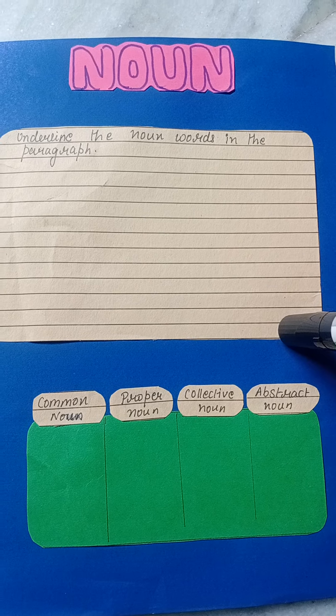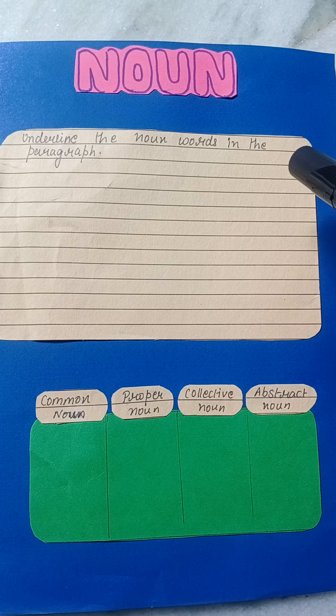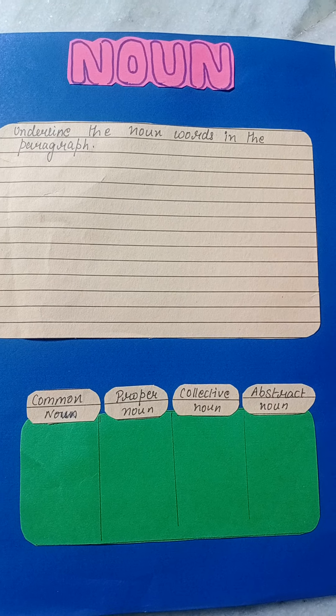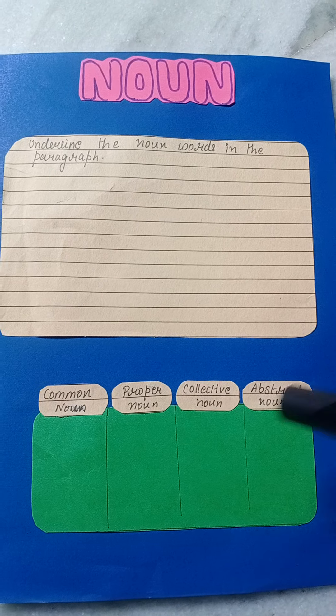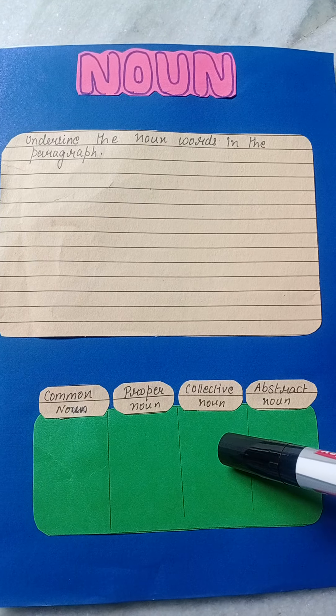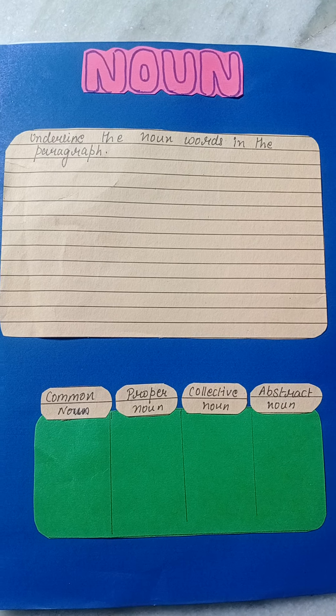This is your book, chapter number one. You have to take any paragraph — suppose you have written this paragraph, you will take a single paragraph from here to here. At least five to six, or seven to eight lines. You will take a paragraph of that length.